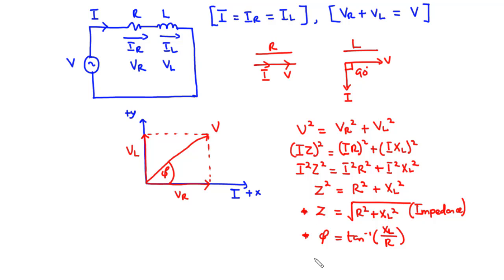We also have the relation Z = R + jXL, which expresses the impedance of the RL circuit in rectangular form. With this in mind, let's solve a couple of examples.